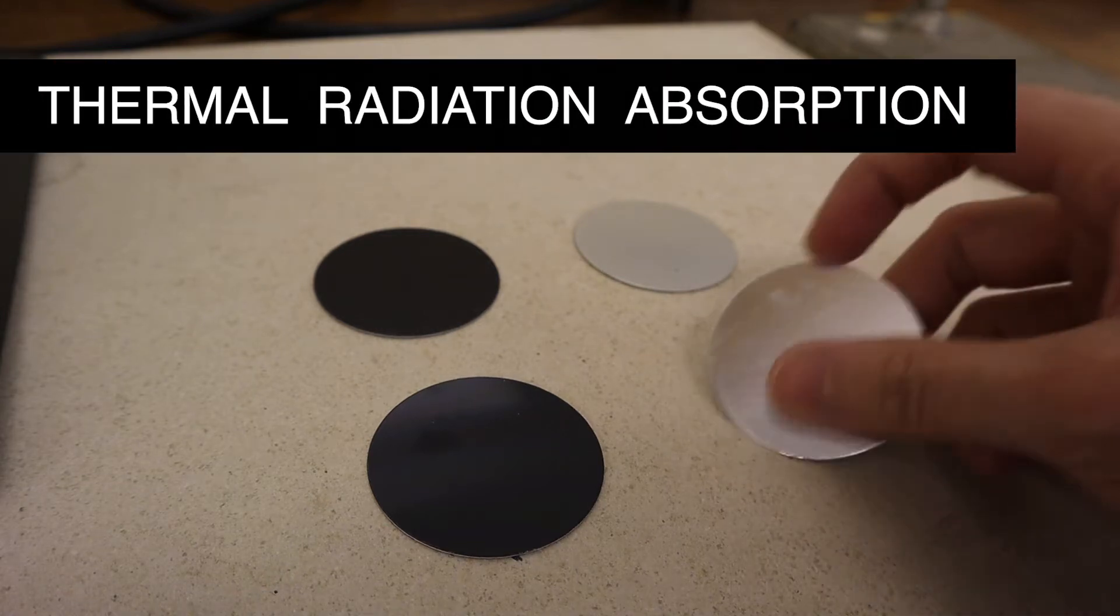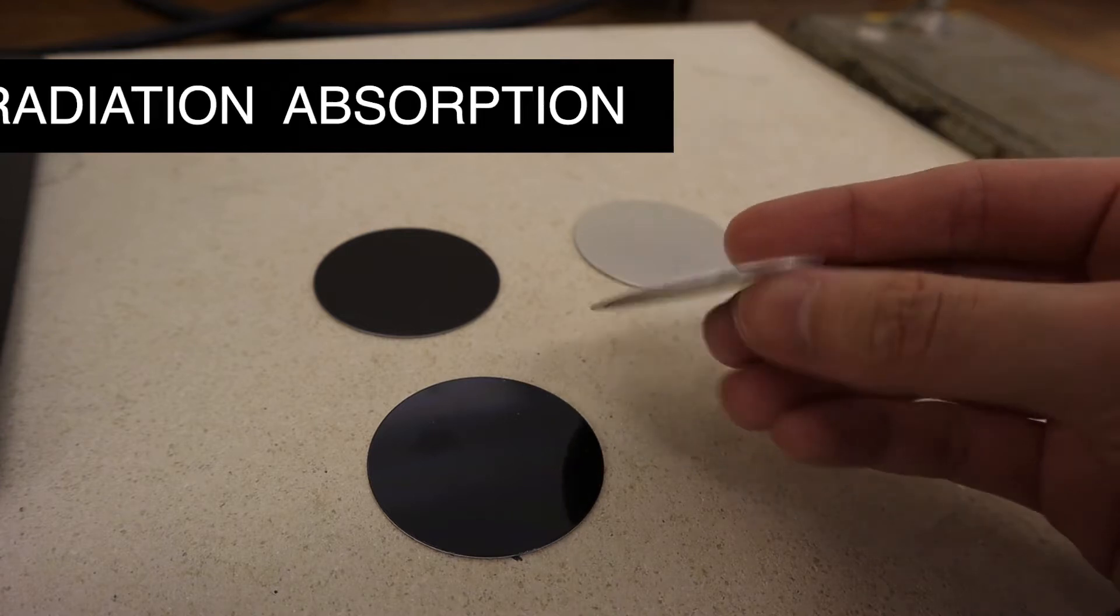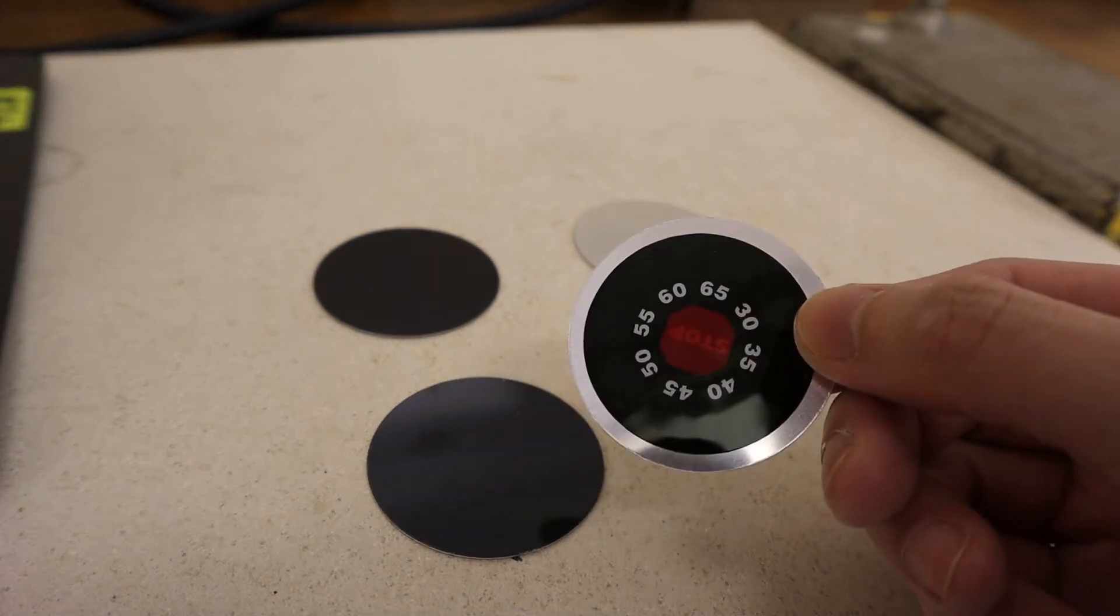To find out which color and texture make the best absorber of heat radiation, we're gonna use these discs, each with a thermometer on the back.